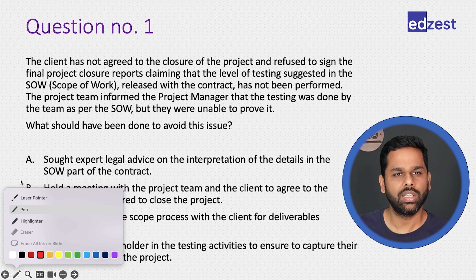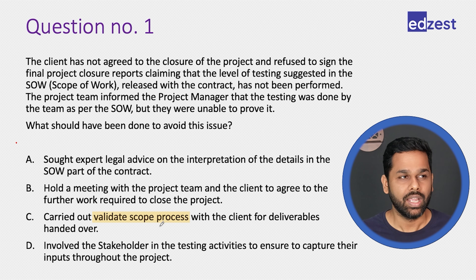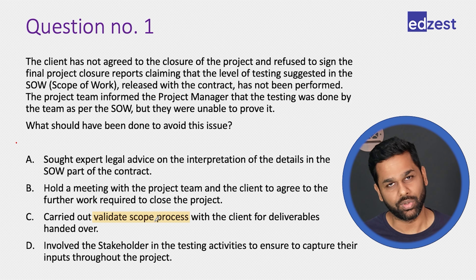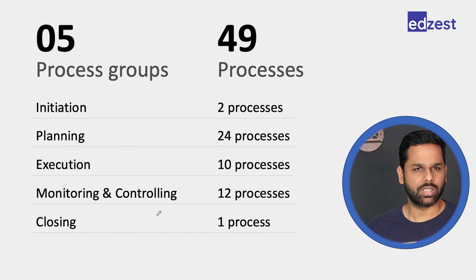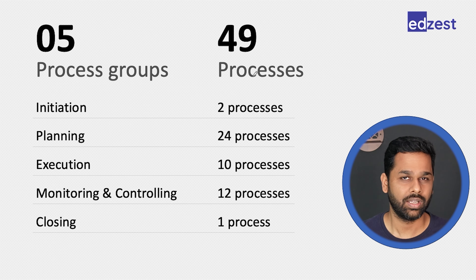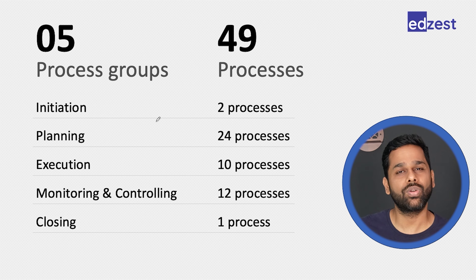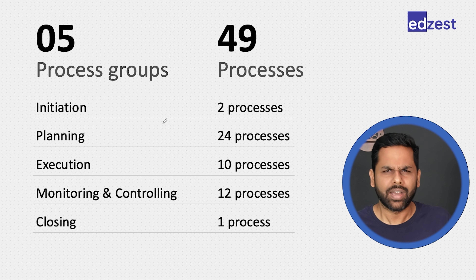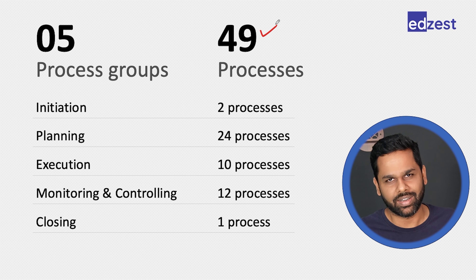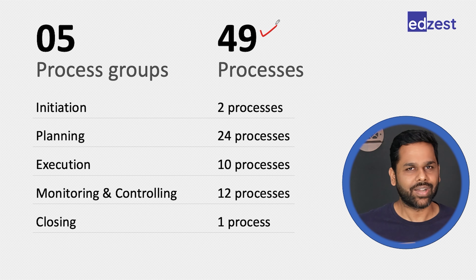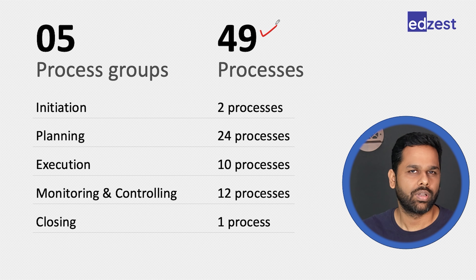In this question, you see the name of a process mentioned — the validate scope process. It is one of the processes of the traditional approach, which is divided into multiple process groups. When you study for the traditional approach, you study for five process groups and 49 processes: initiation, planning, execution, monitoring and controlling, and closing. You don't have to memorize the exact numbers for the exam, but you should know about them to understand the traditional approach well.